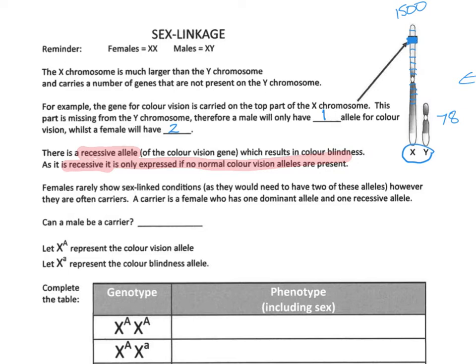One of my cousin's daughters is colour blind, which is really unusual. For a female to be colour blind, she needs two X chromosomes each carrying the colour blindness allele. I have several male cousins and uncles who are colour blind — they only need one copy of the colour blind allele, and they're going to be colour blind.